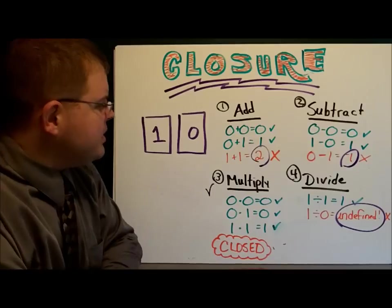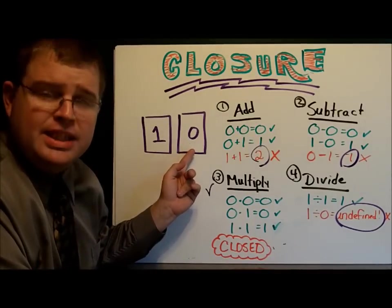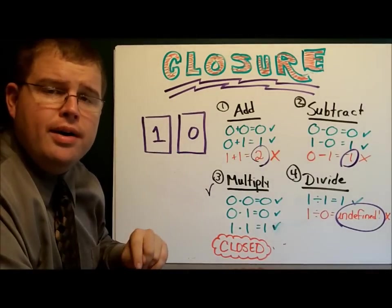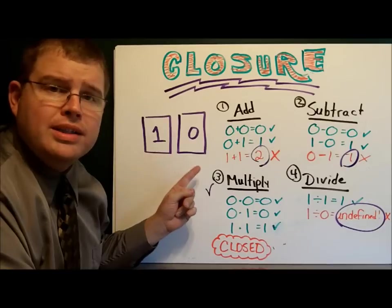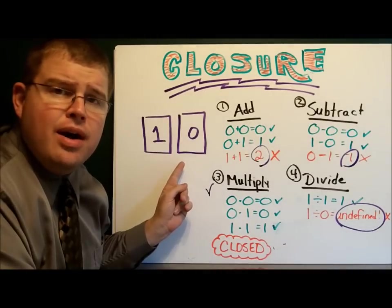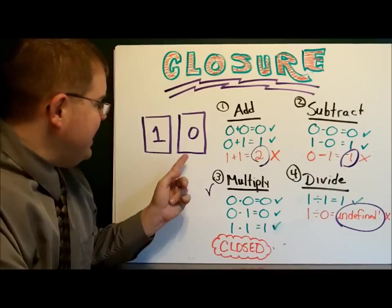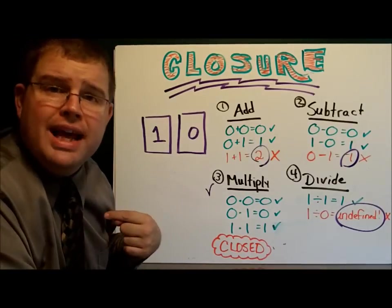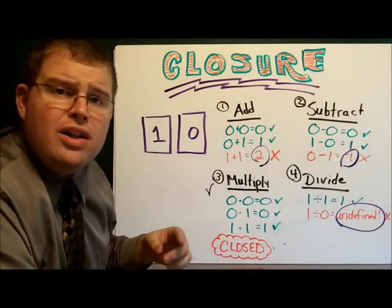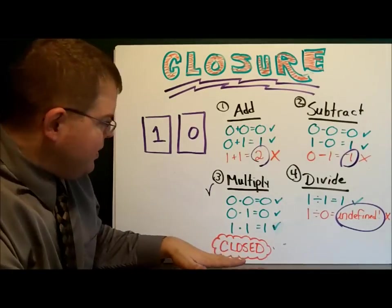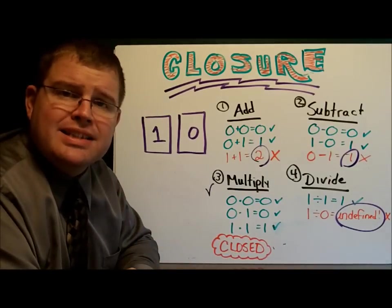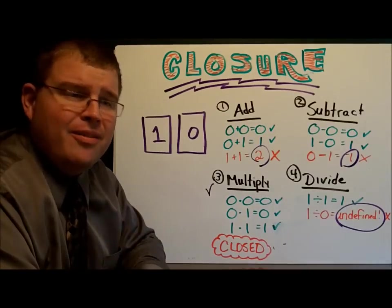How about multiplication? Zero times zero? Zero. One times one? One. One times zero? Zero. Hey, the answer was always in here. I won that round. We call it closed. We call it closed. We say that the set is closed under multiplication. I won that one.